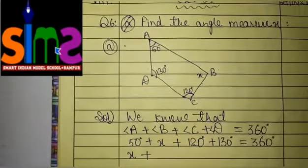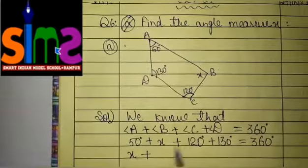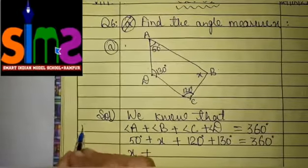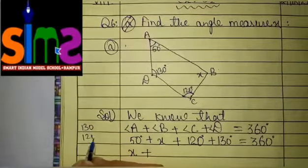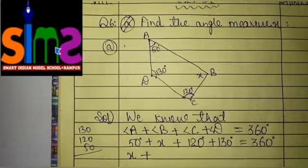Then, positive sign. After that, we will add 130, 120 and 50. So we can add 130, 120 and 50 here in our rough space.